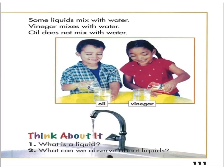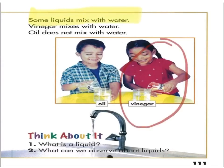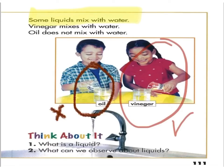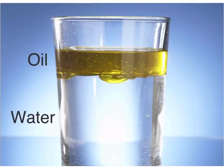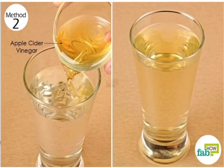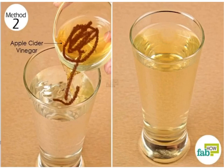Go to page 111. Some liquids mix with water. Vinegar mixes with water, but oil does not mix with water. Oil stays on the surface of water. Vinegar mixes with water, so unlike oil with water, there is nothing on the surface.